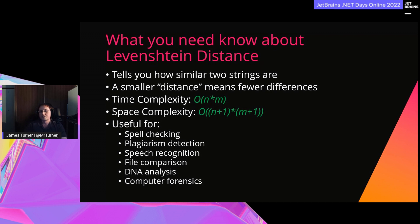In my case, I wanted to use Levenshtein distance between two web pages at different points in time. After stripping all the HTML and anything else out of the way, I could be left with a few thousand to tens of thousands of characters. To understand the performance optimizations I can talk about, it's important to walk through how you'd typically calculate Levenshtein distance.